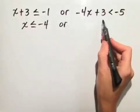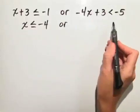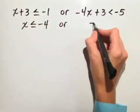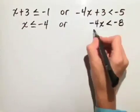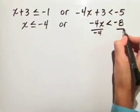Or, for our second inequality, let's first subtract 3 from both sides. We have negative 4x is less than negative 8. Let's divide both sides by negative 4.